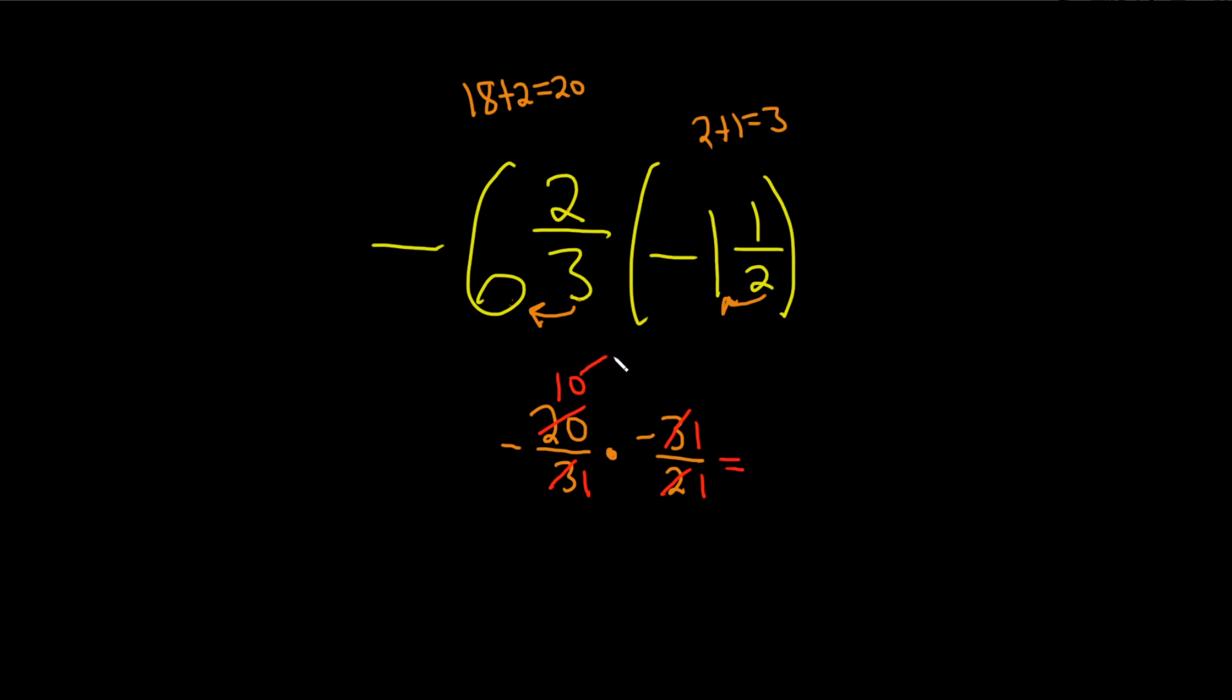now you just multiply straight across. 10 times 1 is 10. 1 times 1 is 1. And what about the sign? Well, they're both negative, so the answer is positive. I always do the sign at the end. I just kind of let it hang out the whole problem. Negative and negative is positive. And this is really nice, because 10 over 1 is actually just 10. Pretty amazing. So this is equal to 10. I did not expect that.